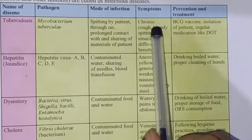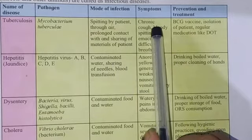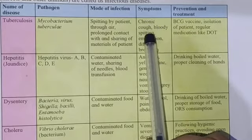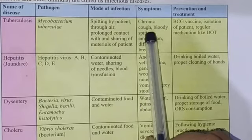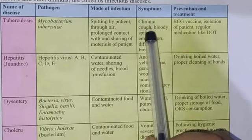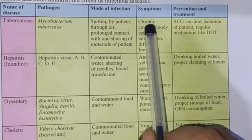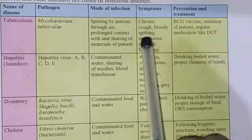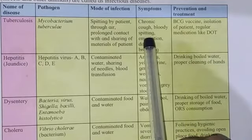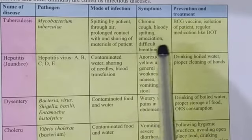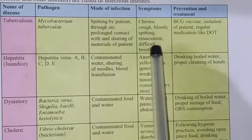Now, symptoms — how can we know that a person is suffering from tuberculosis? The symptoms are: chronic cough, meaning a cough that lasts not just 2 or 3 days but for a long period, like a month. Bloody spitting, meaning blood can come out with the spittal. Emaciation. Difficult breathing — the person finds it difficult to breathe because of the bacterium present inside the body.